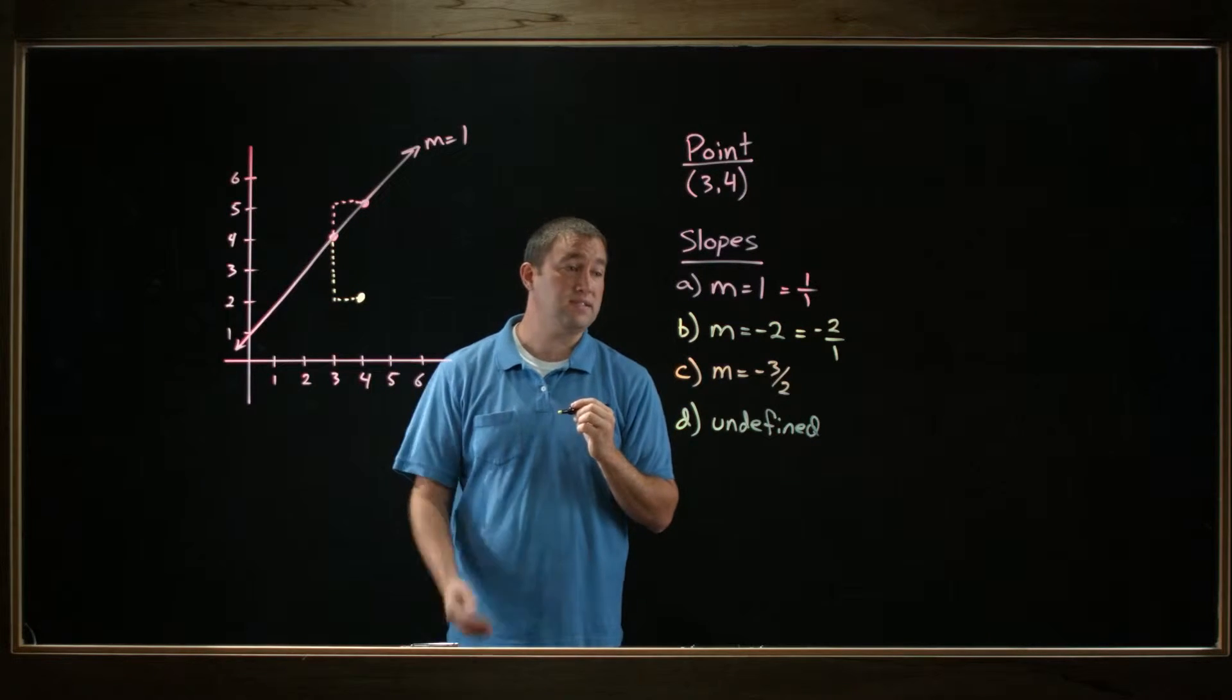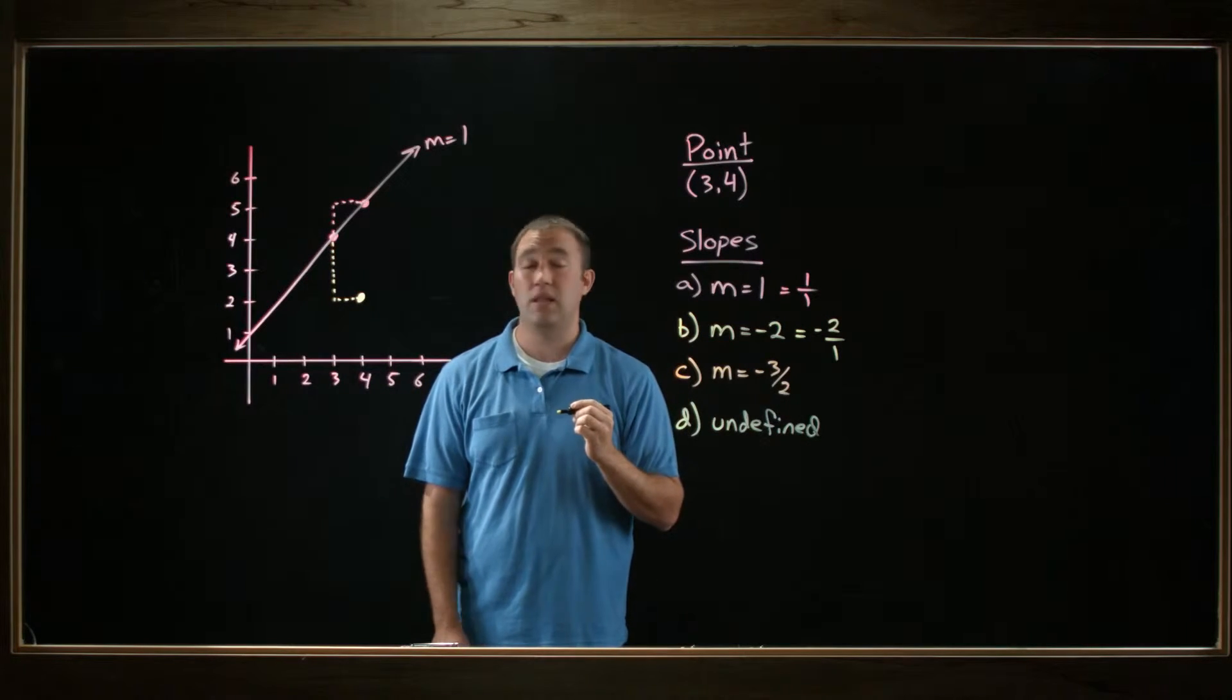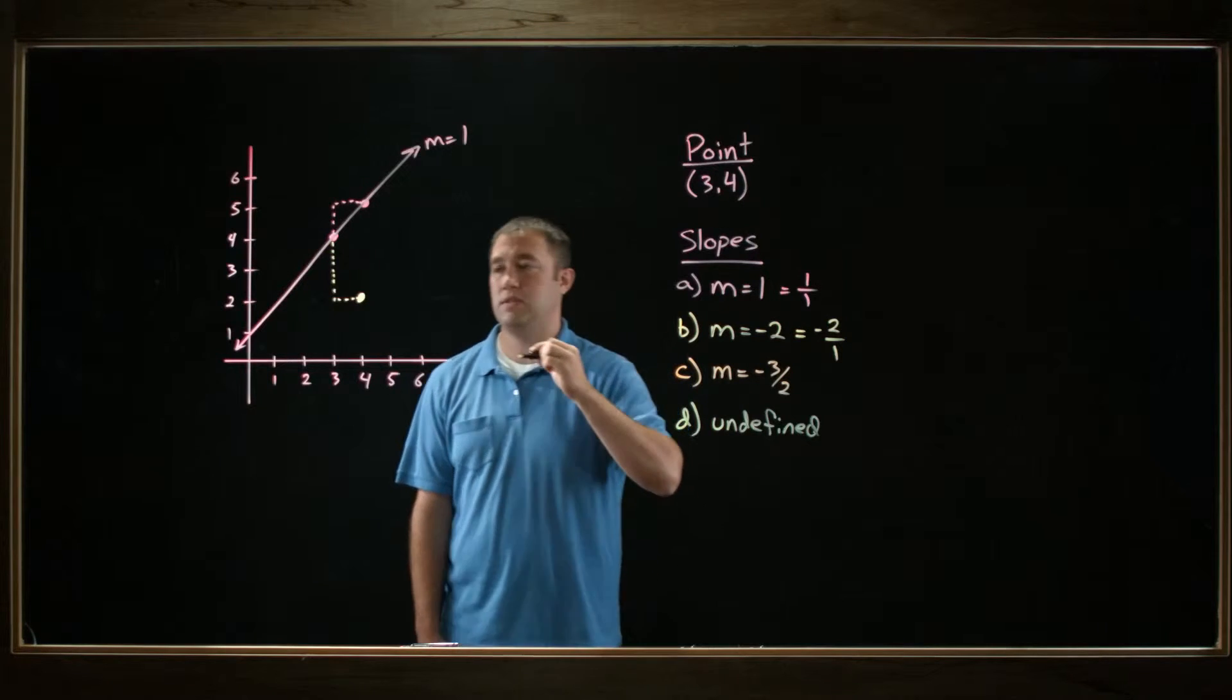If I connect those dots, then I should have a line of slope negative 2. So let's look at that.